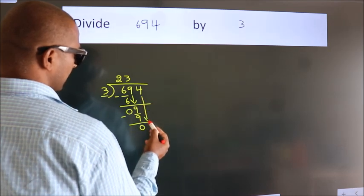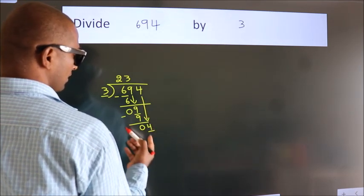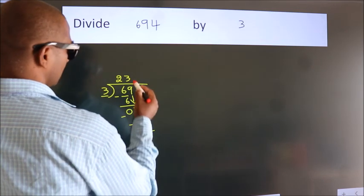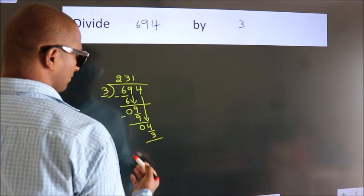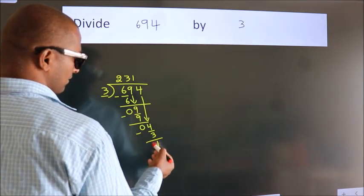bring down the beside number. So 4 down, so 4. A number close to 4. In 3 table is 3 1s, 3. Now we subtract, we get 1. After this,